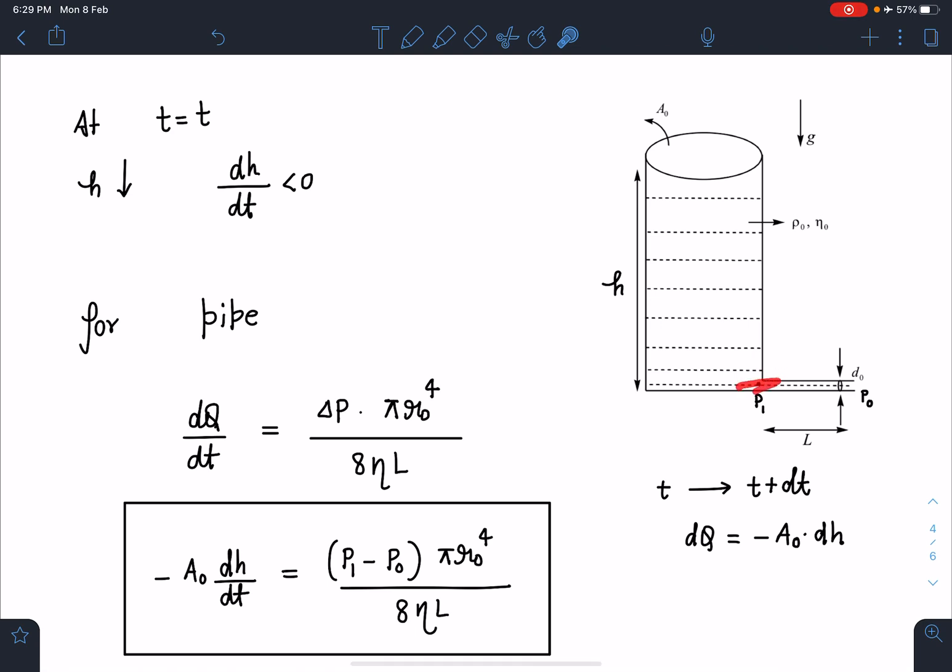So dQ is the volume which is entering in the pipe in a dt time, which is A₀ dh. A₀ is this cross section area. This height h is changing by dh, so minus A₀ dh kinematically if I write, because dh is actually negative. So here you can see this is the volume.